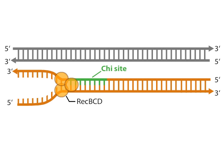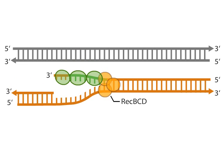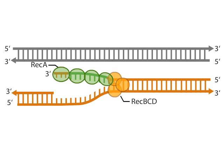The complex then nicks the DNA and continues unwinding as it loads a protein called REC-A onto the three-prime tail of the single-stranded DNA. The REC-A covered DNA strand is called a REC-A filament.